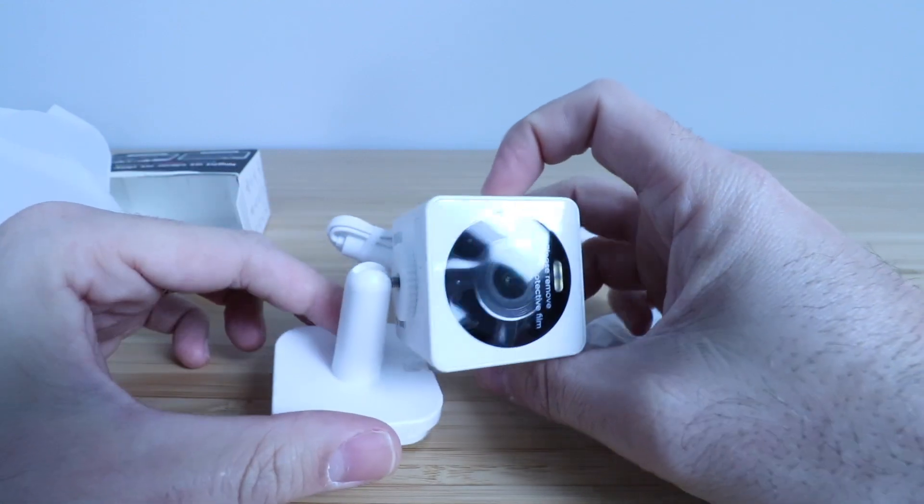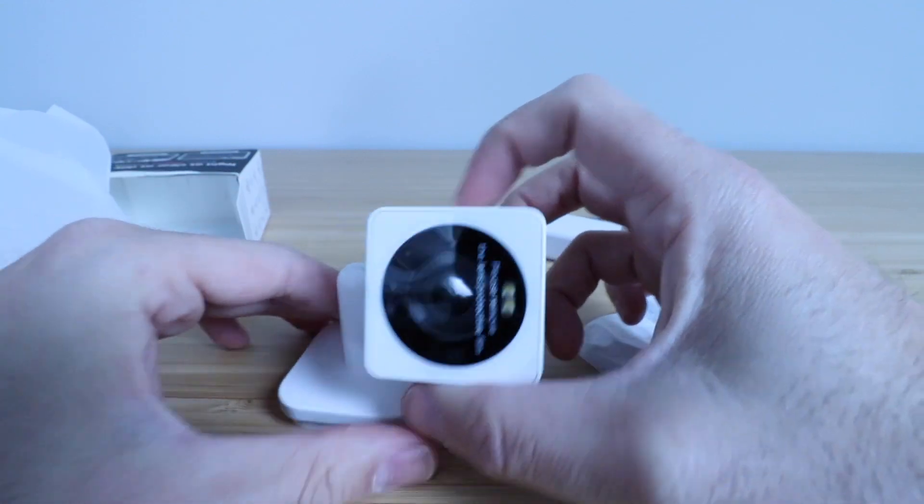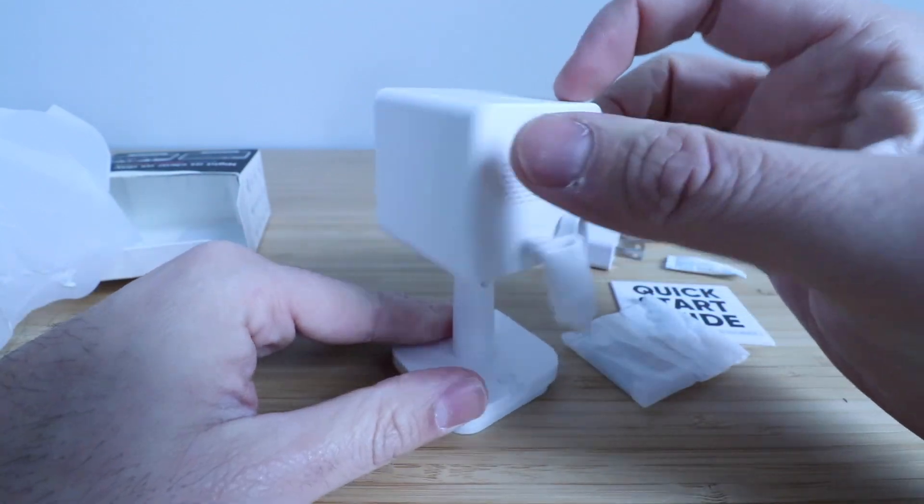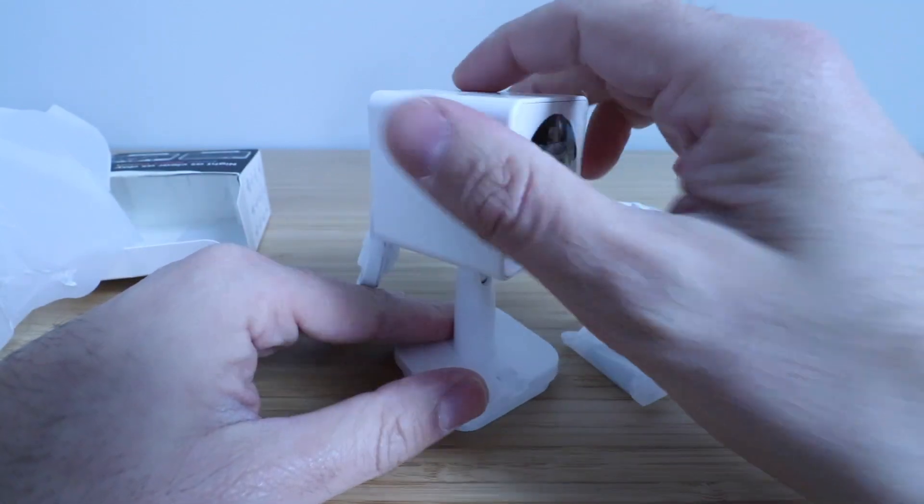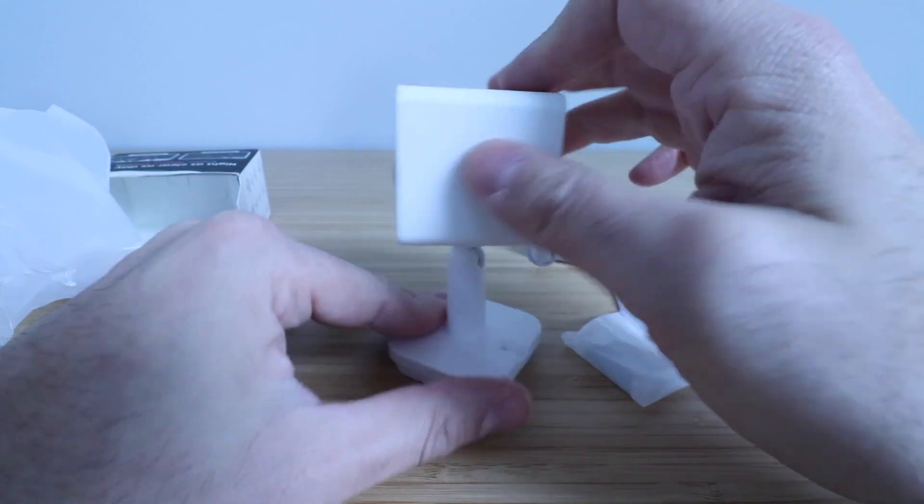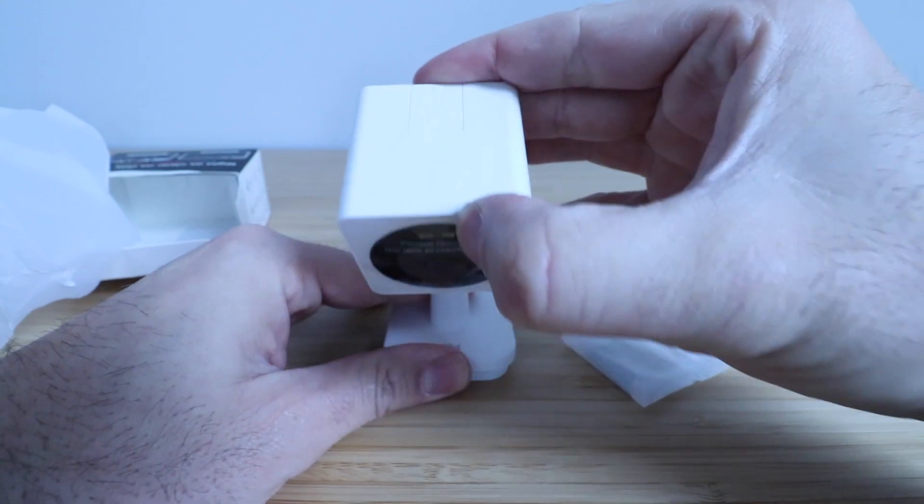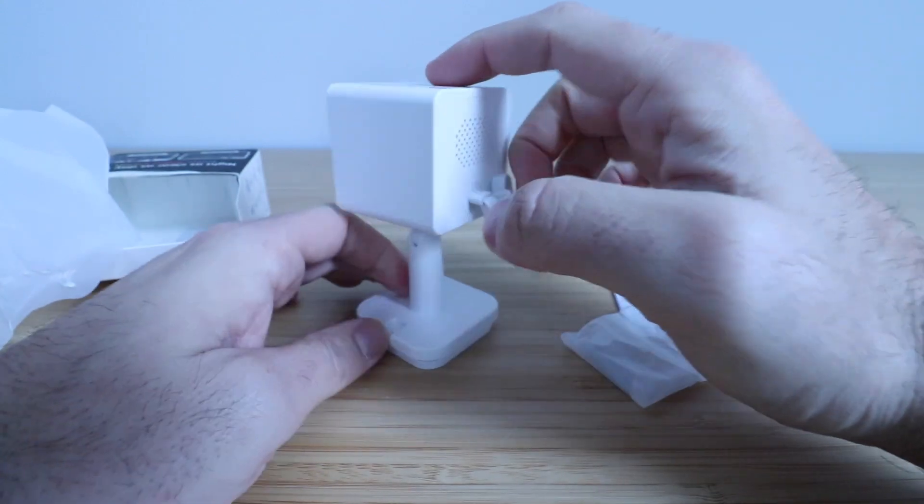But what I like about this compared to other versions of the Wyze cam is that now you have this base that allows you to position it any way you want. You've got full 360 degrees, but then you can also tilt it up or you could turn this around and tilt it down, which is great.